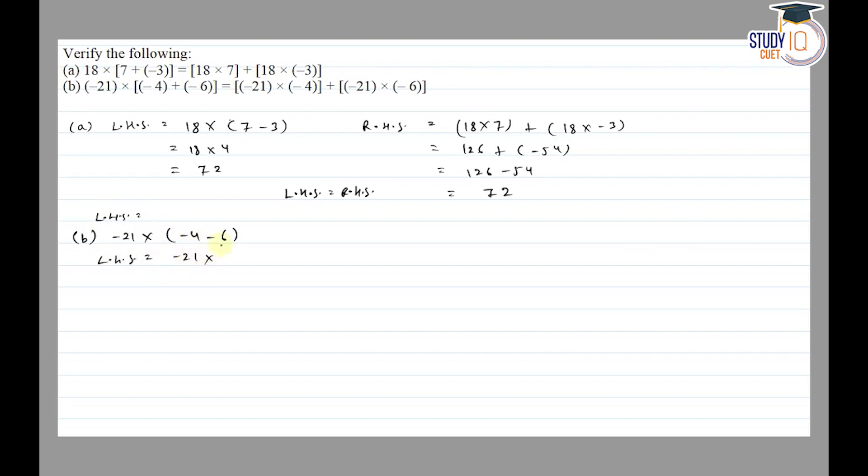So that's 210. And RHS is equal to minus 21 into minus 4 plus minus 21 into minus 6.